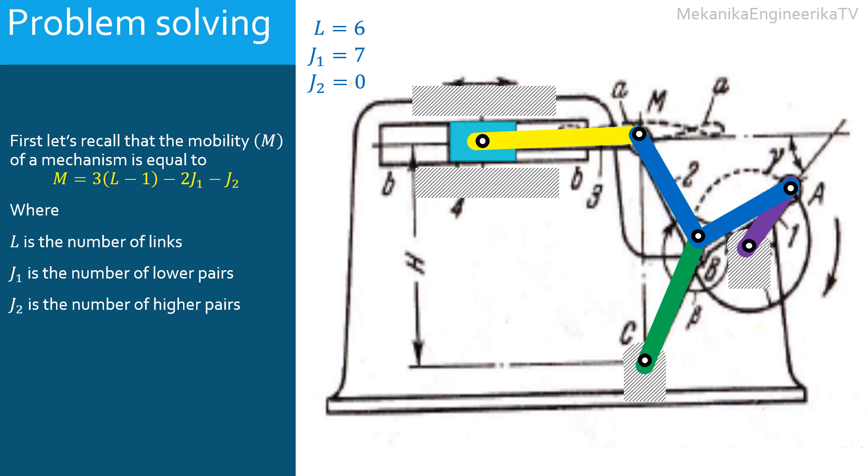Thus the mobility is equal to three times six minus one minus two times seven minus zero. Hence, the mobility is equal to one. This mechanism has then one degree of freedom. This mechanism allows one input. It is possible to control externally only one link.